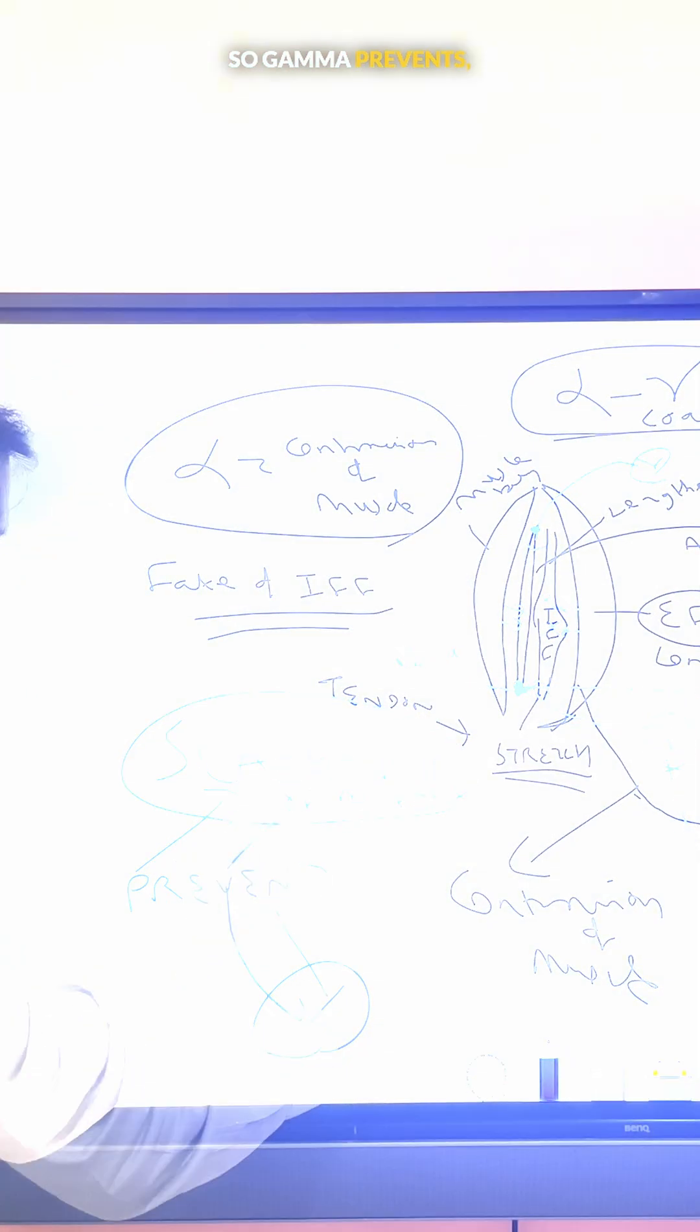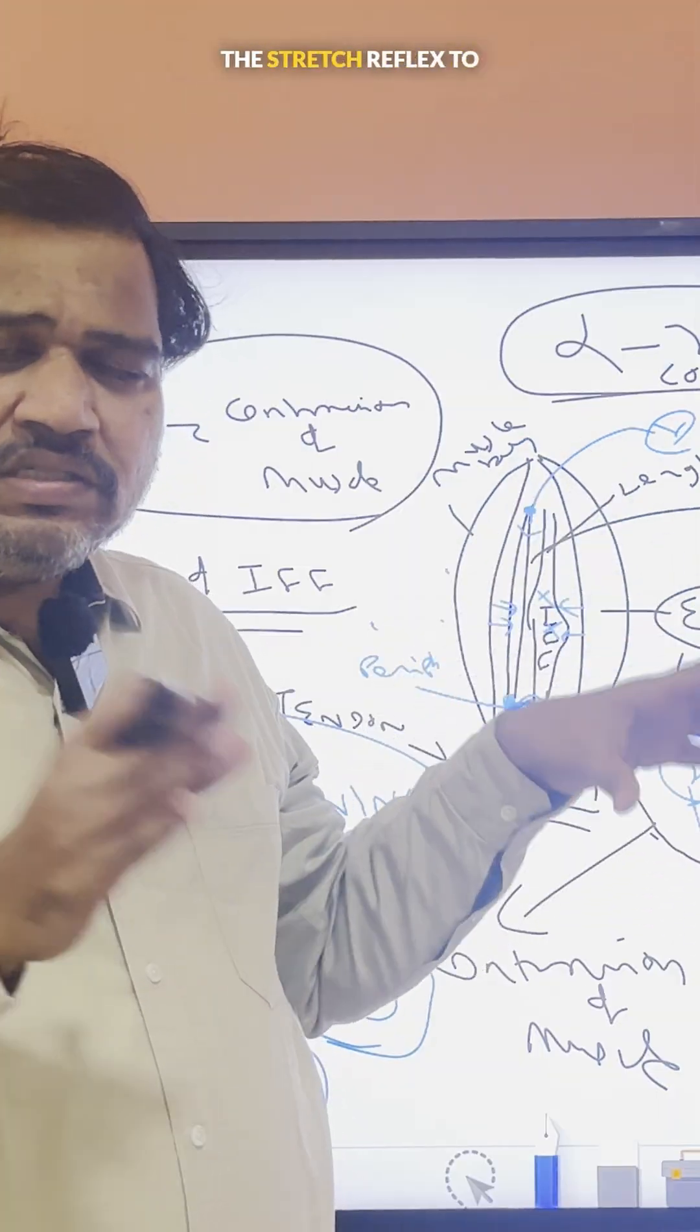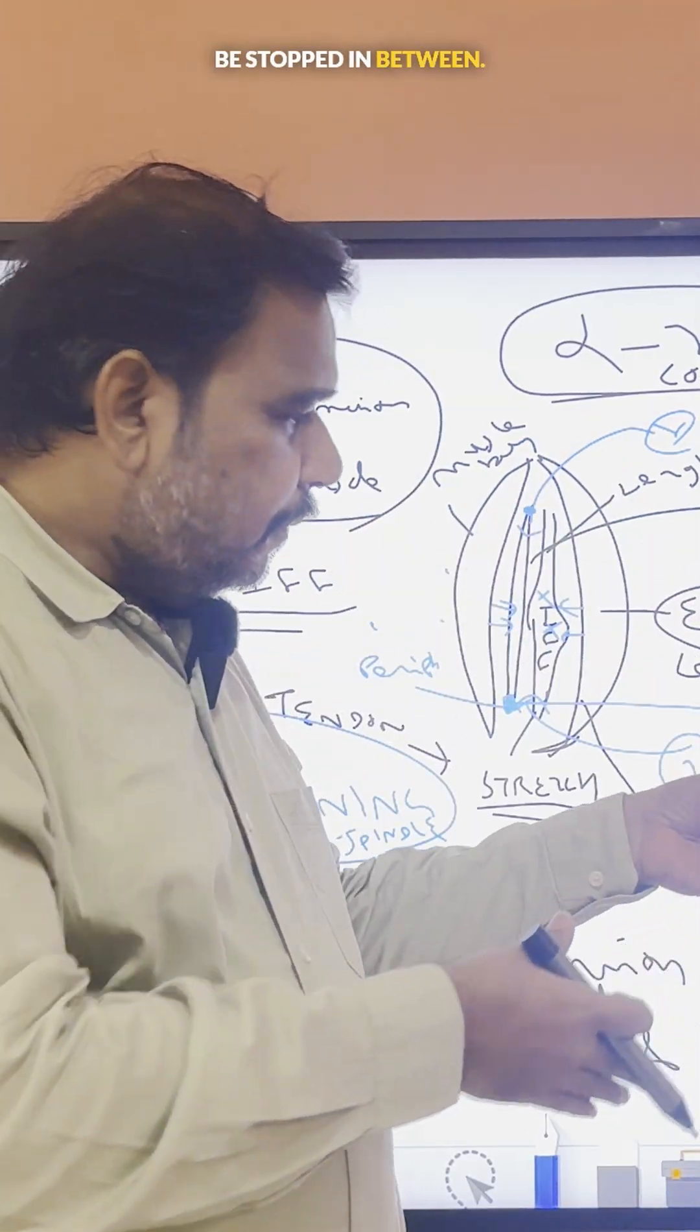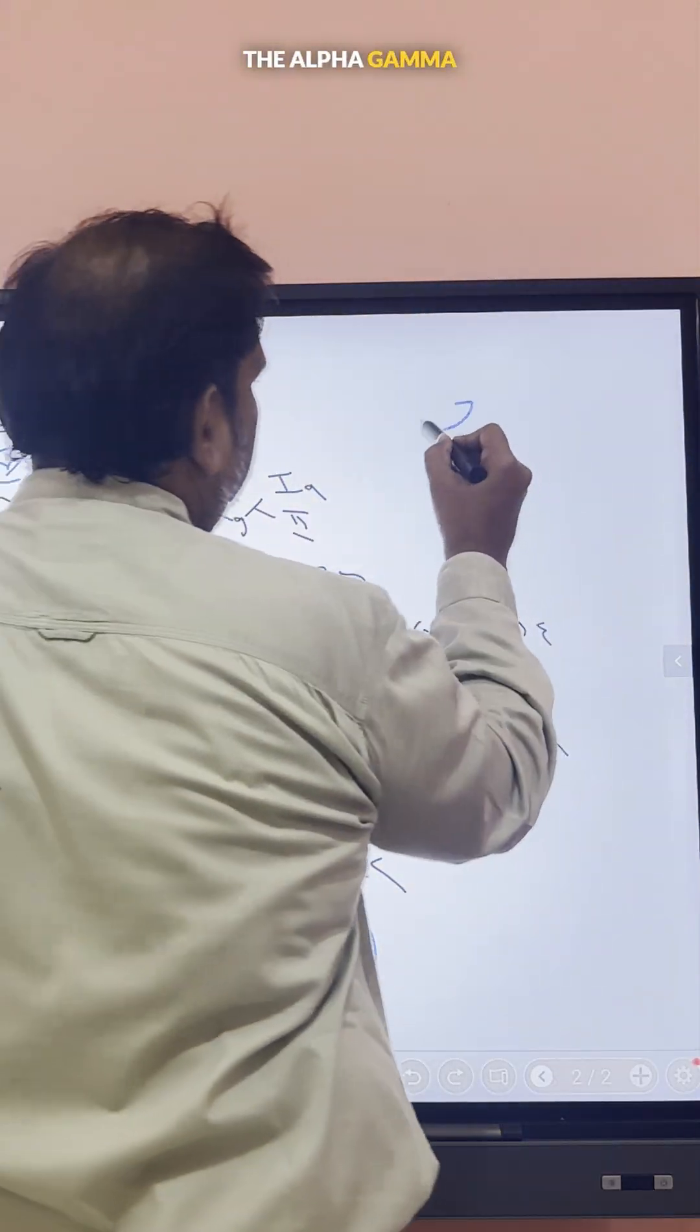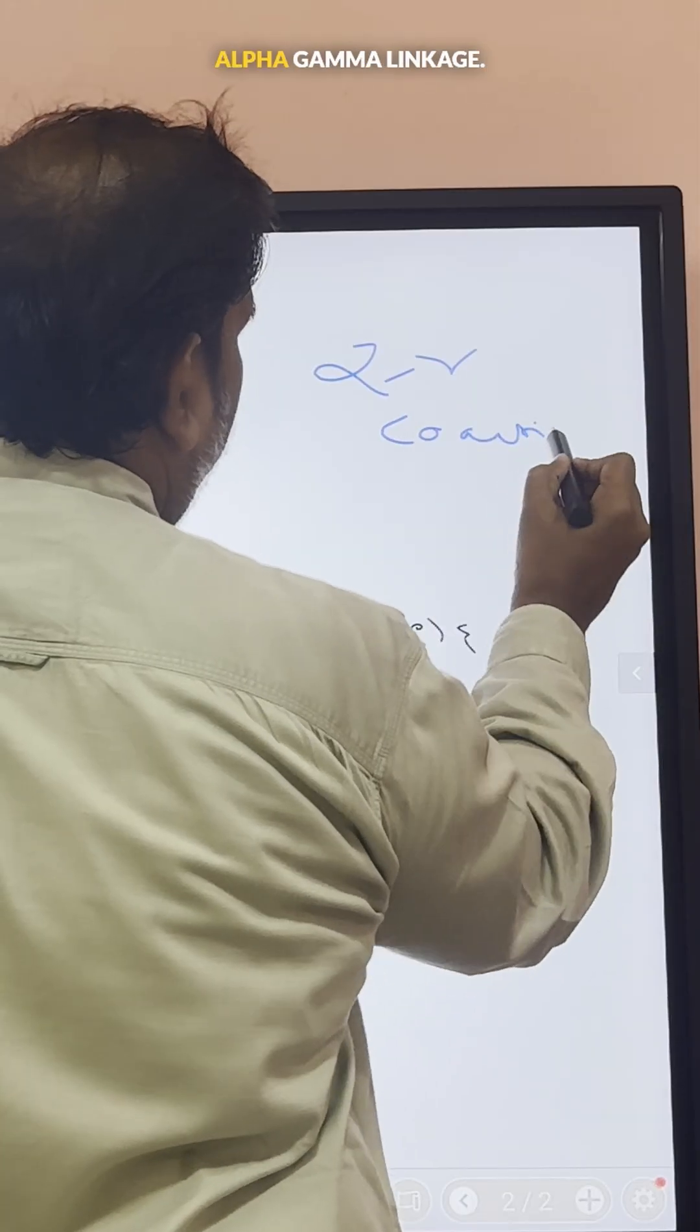So gamma prevents slackening of the intrafusal fiber to prevent the stretch reflex from being stopped. The alpha-gamma co-activation is very important. It is also called alpha-gamma linkage.